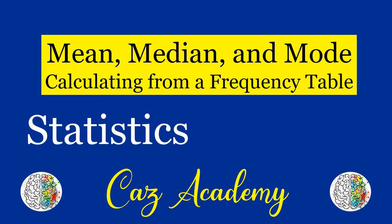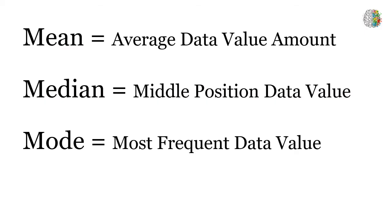Welcome to today's statistics tutorial. Today we're going to look at how to calculate the mean, median, and mode using a frequency distribution table. The three measures of the center of data are mean, median, and mode.